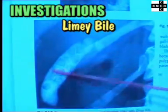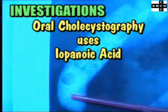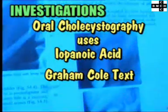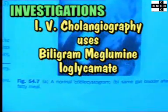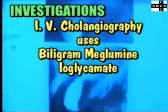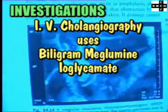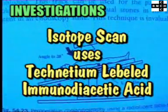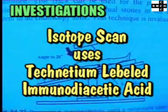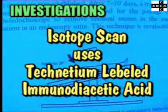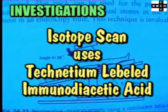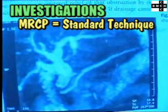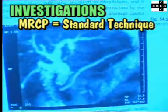Sometimes limey bile could be seen in radiographs. Prior to the days of ultrasound, oral cholecystography was carried out using iopanoic acid — this is called the Gram-Chol test. Intravenous cholangiography uses the dyes biligram, meglumine, and ioglycemate. Radiography or tomography could be carried out after intravenous injection. Isotope scanning uses technetium-labelled derivatives of iminodiacetic acid, and is often used to check the adequacy of biliary-enteric anastomosis. MRCP, or magnetic resonance cholangiopancreatography, is now becoming a standard technique in the developed world, because it is non-invasive.